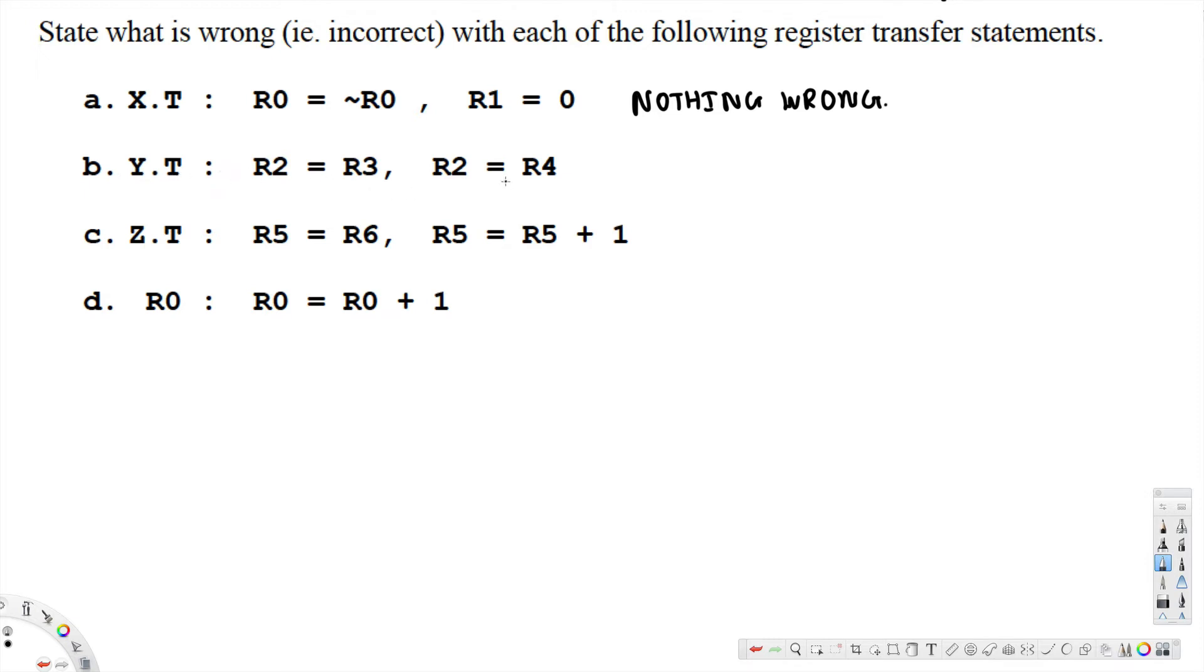Now let's look at this one: Y.T, R2 is equal to R3, R2 is equal to R4. So here we cannot have both at the same time, so we can say cannot do both at same time.